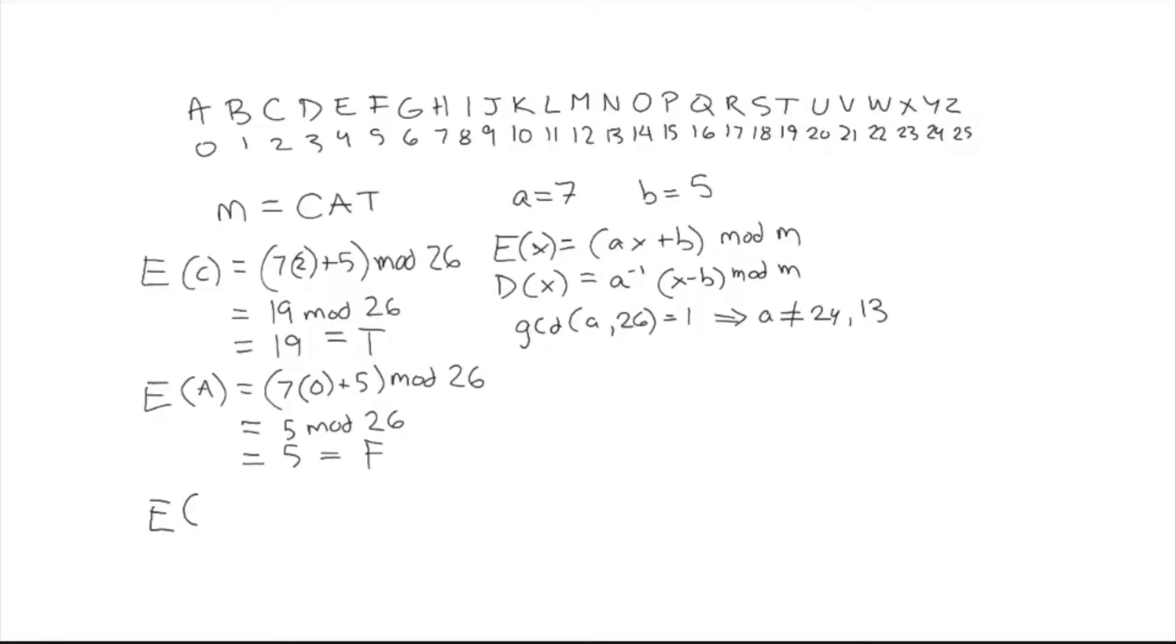And lastly, we're going to encrypt the t. So there we get 7 times 19 plus 5 mod 26. So that's going to be 138 mod 26. And so here we actually do need to perform the mod. And we end up with 8. And that gives us i. So we can say that ciphertext is going to be tfi. And there's our encryption.